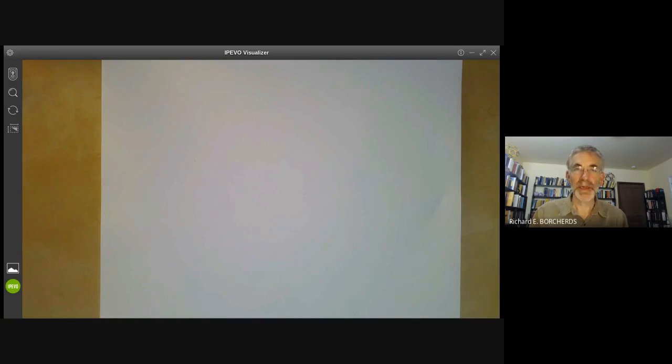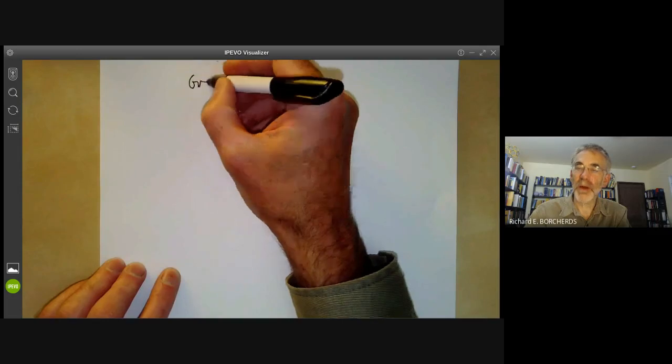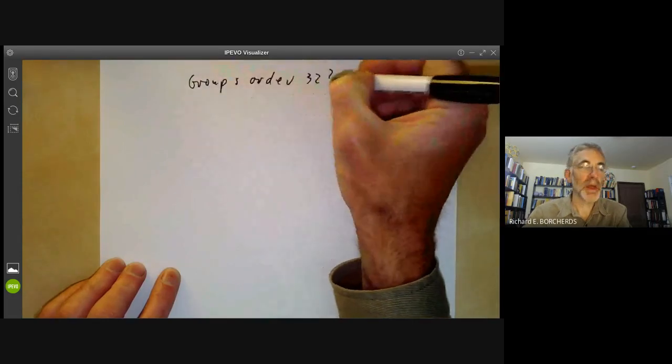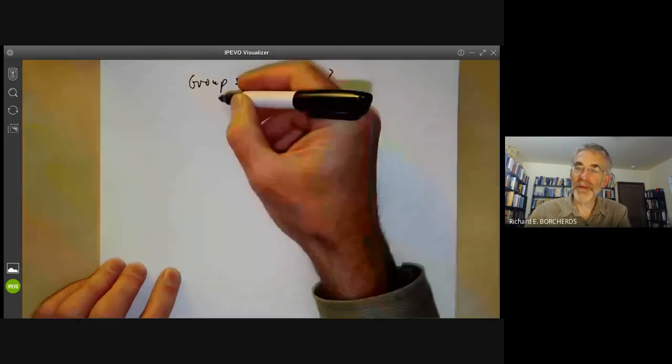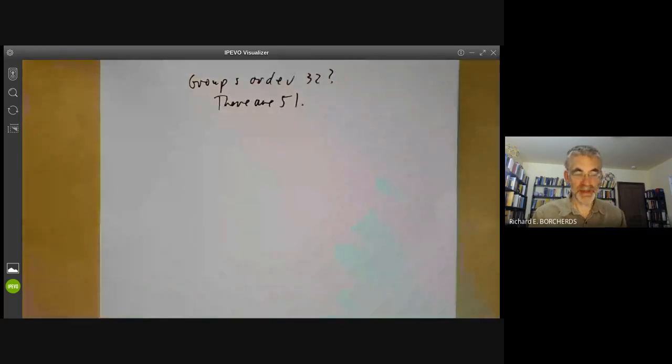This lecture is part of an online mathematics course on group theory. In this lecture we're going to be explaining why we're not going to try and classify p-groups. In previous lectures we've more or less classified all groups of order less than 32, so we can ask what about groups of order 32. We're not going to classify them because there are 51 and it's really not terribly exciting to look through them all.